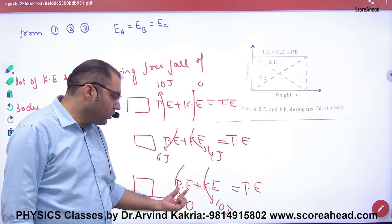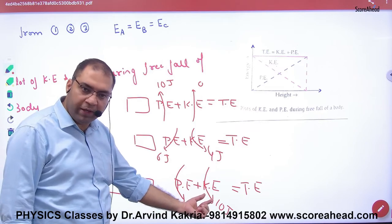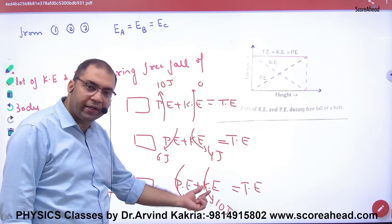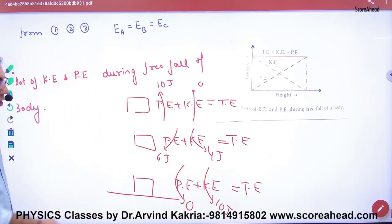So maximum potential energy is also known as total energy. When potential is zero, kinetic is maximum. Maximum kinetic energy is known as total energy.